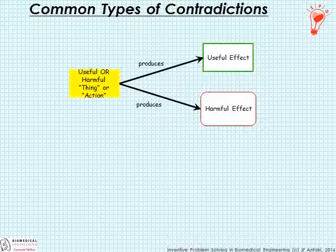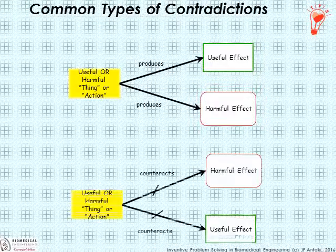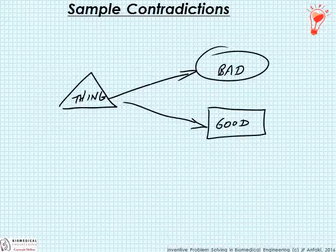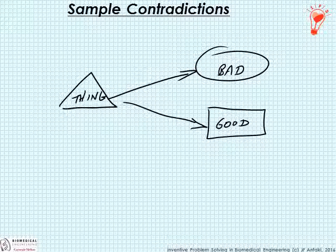Here are common types of contradictions. A thing or an action — whether useful or harmful — if it produces both a useful effect and a harmful effect, there is a contradiction. If that thing or action counteracts a harmful effect, overall that's a good thing; but if it counteracts the useful effect, we're paying a price, and that's a contradiction. When we don't have color graphics or fancy software, we can write contradictions using three shapes: a triangle for a thing or action (neither good nor bad), circles for bad things, and boxes for good things.